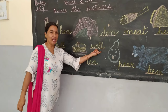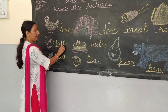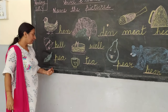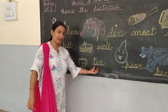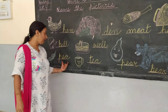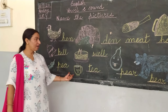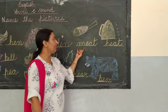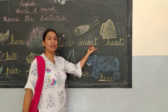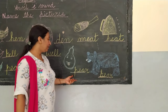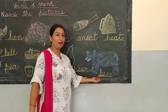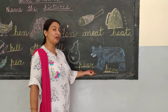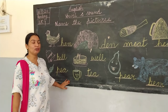Bell and well — both have E-L-L and they are rhyming words. Pea and tea — both have E-A sound and are rhyming words. Meat and heat — both have the E-A-T sound and are also rhyming words. Pear and bear — both have E-A-R and are rhyming words. So these are all E sound words and they are also rhyming words.